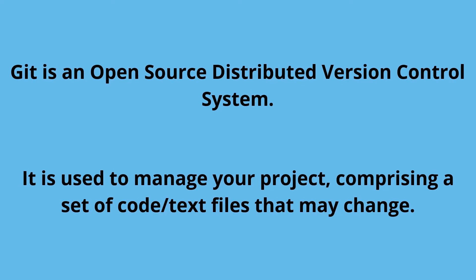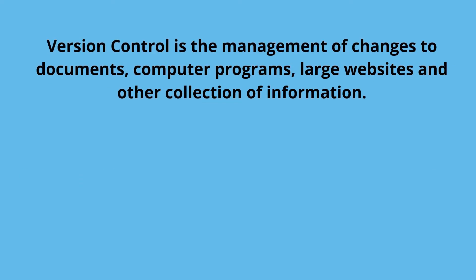When multiple software developers are working on the same project, we can see who has committed which change, so we can track them. Version control is basically a management of changes in documents, computer programs, large websites, and other collections of information. For example, suppose we have implemented a feature X in our project and when we showed it to the client, the client said he didn't want that feature. So you deleted that code, but after some time the client says he needs that feature again. We would have to write that code again because we had not kept a revision of it. So we need a version control tool so that if we need to revert a change or apply it again, we have that information.